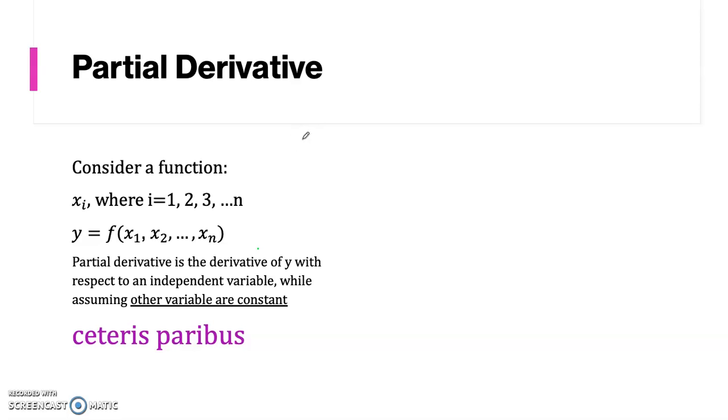In the usual derivative, we write the derivative of a function dy over dx. This is if our function y is a function of one variable. If we have a function of more than one variable,